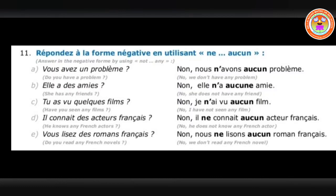Next: Tu as vu quelques films — you have seen a few films. No — Je n'ai vu aucun film. Here you can see it is written after the past participle — je n'ai vu, then aucun. Film is masculine so we use aucun. This is what was mentioned: ne...aucun can be written after the past participle, but ne...pas cannot. Then: Il connaît des acteurs français — he knows some French actors. No — Il ne connaît aucun acteur français — he doesn't know any French actors. It is in third person singular so the answer also stays in third person.